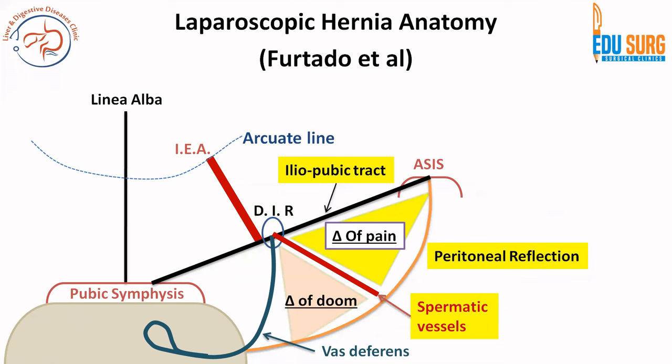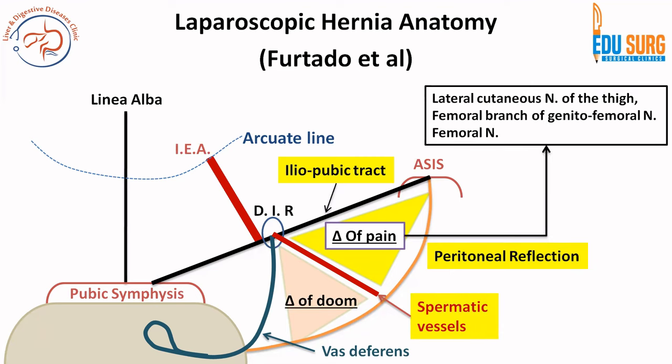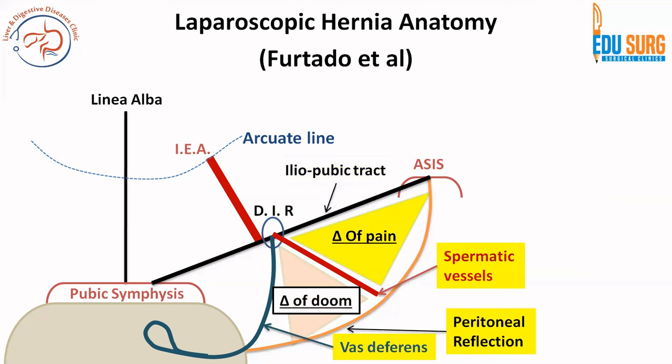The two very important triangles routinely asked about are the triangle of pain and triangle of doom. The boundaries of the triangle of pain are: the iliopubic tract superiorly, the peritoneal reflection on one side, and the spermatic vessels medially. It is known as the triangle of pain because many nerves pass through that area — essentially the femoral nerve, the lateral cutaneous nerve of thigh, and the femoral branch of the genitofemoral nerve. No tacker should be applied in the triangle of pain to avoid chronic post-operative pain in inguinal hernia surgeries.